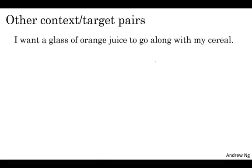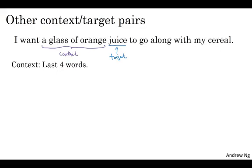But now let's generalize this algorithm and see how we can derive even simpler algorithms. So I want to illustrate the other algorithms using a more complex sentence as our example. Let's say that in your training set, you have this longer sentence. I want a glass of orange juice to go along with my cereal. So what we saw on the last slide was that the job of the algorithm was to predict some word juice, which you want to call the target word, and it was given some context, which was the last four words.